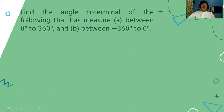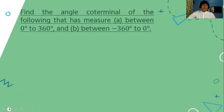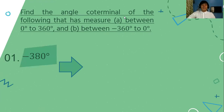Now for an illustrative example, we find the angle coterminal for the following: letter A between 0 to 360 degrees — the positive coterminal angle — and letter B between negative 360 degrees to 0 degrees — the negative coterminal angle. The given angle is negative 380 degrees. If we illustrate that on a Cartesian plane, all angles in standard position must start from the initial side, which is the positive x-axis.